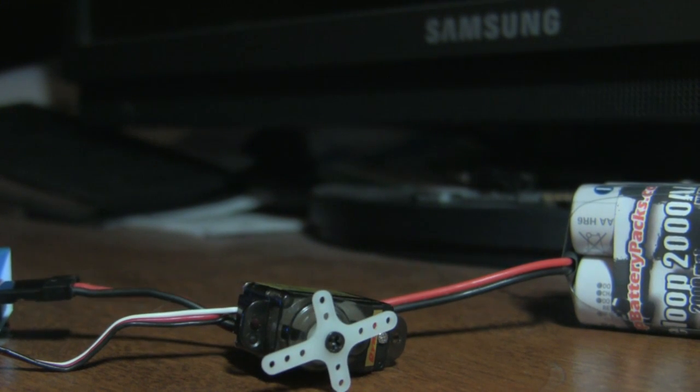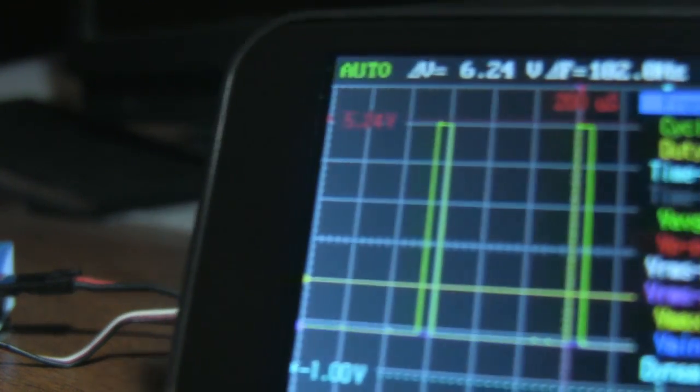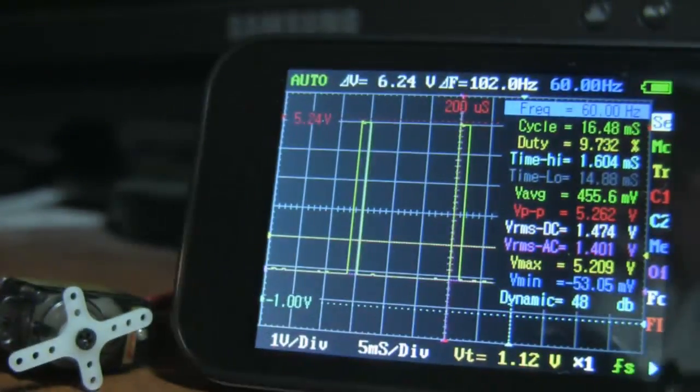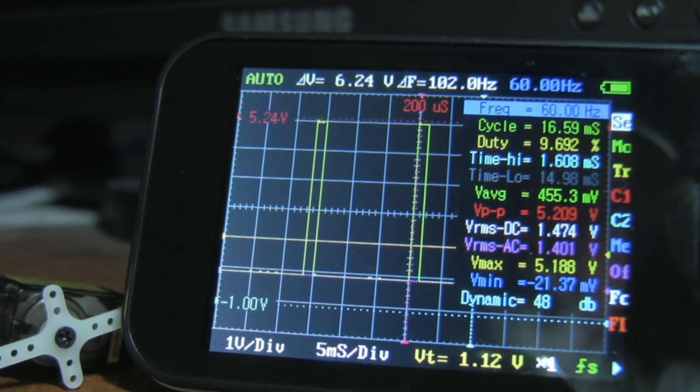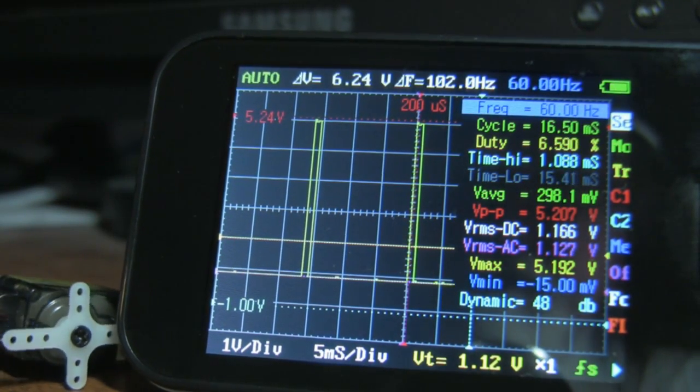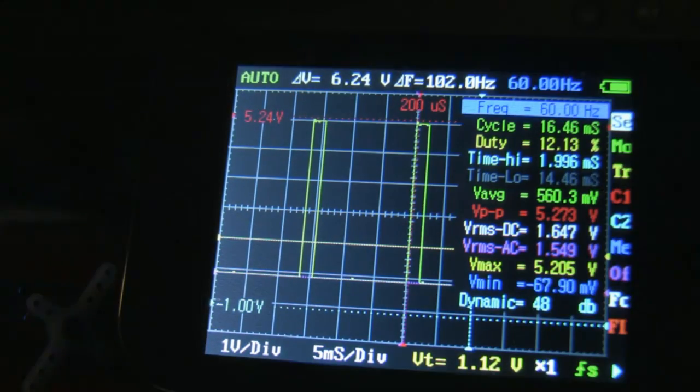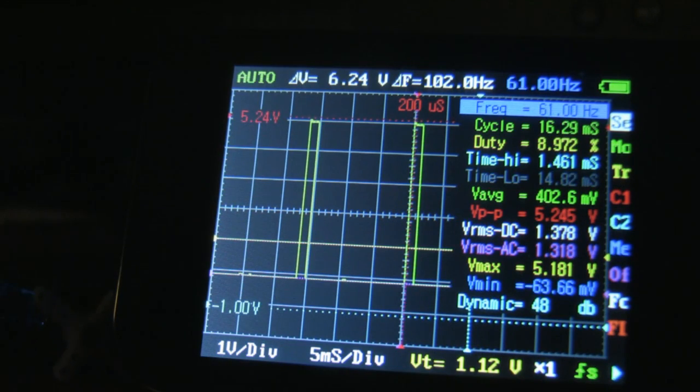So let's see what's happening on the scope as I do that. If I put the scope into the picture, maybe I can get them both in at the same time. Notice that as I begin to adjust this, I can see the pulse width change.